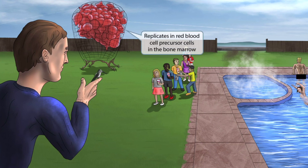To make this pool party extra fun, you can see that the host has purchased a bunch of red balloons, which will be passed out later. They've carefully been placed inside of an enclosed area because otherwise they would fly away. The enclosed area is a symbol for the bone marrow, and the red balloons are a symbol for red blood cells. So together, this should help you remember that parvovirus B19 replicates in red blood cell precursor cells within the bone marrow.